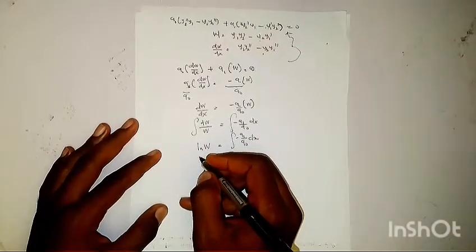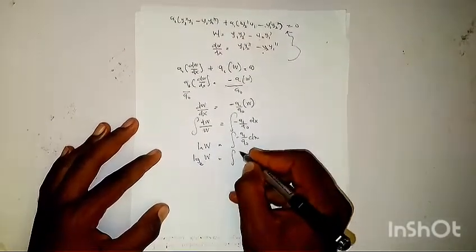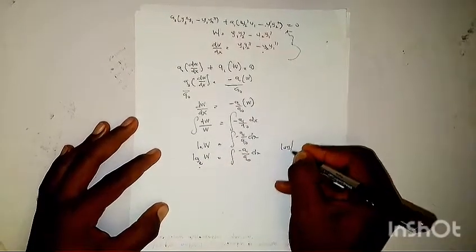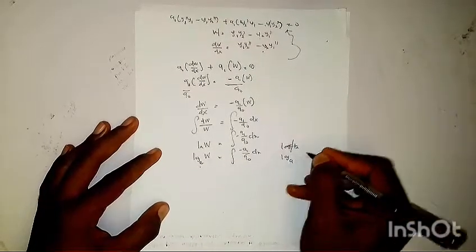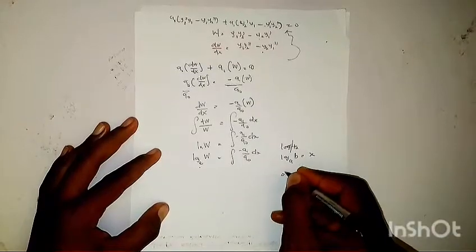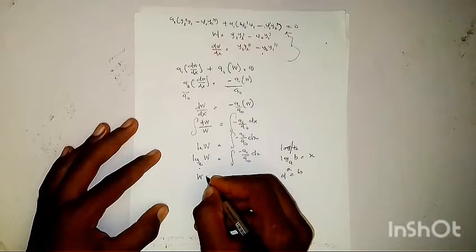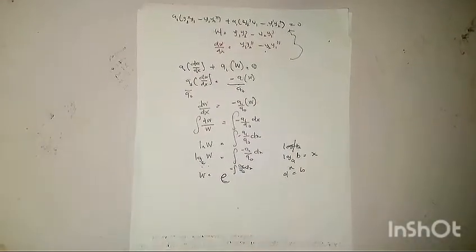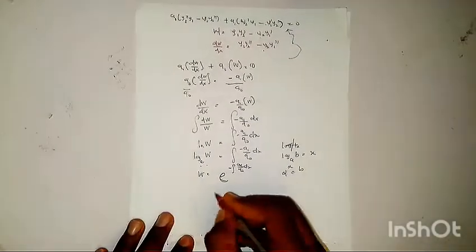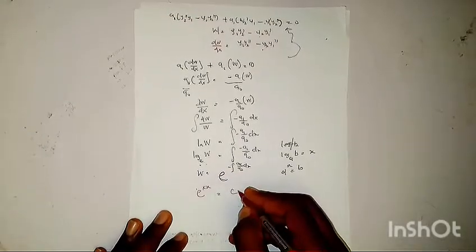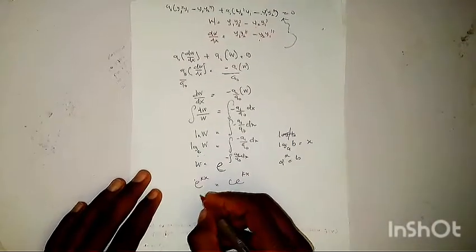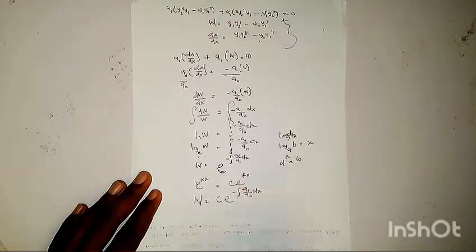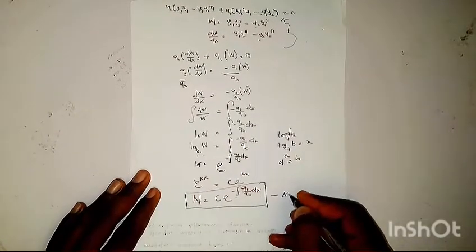Integrating both sides: ln|W| equals the integral of minus a1 over a0 dx. Applying the rule of logarithms — since ln(W) = x implies W = e^x — we get W equals exponential of minus the integral of a1 over a0 dx. Writing in standard form with the integration constant c, W equals c times exponential of minus the integral of a1 over a0 dx. This is Abel's identity.